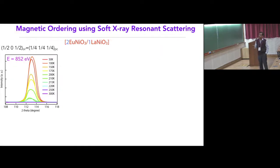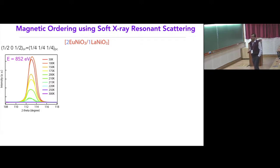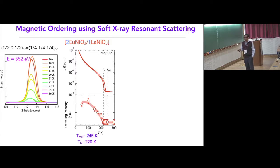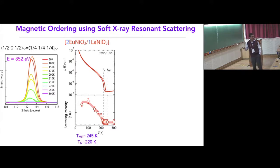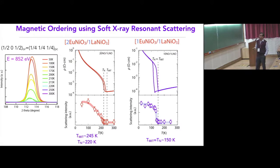For the 2-1 samples, at low temperature we get a diffraction peak and as temperature increases the intensity drops. Plotting the area under the curve as a function of temperature shows an antiferromagnetic-to-paramagnetic transition around 220 K, while the metal-insulator transition temperature is 245 K — these are separated. For the 1-1 sample, both the metal-insulator transition and the magnetic transition are simultaneous.